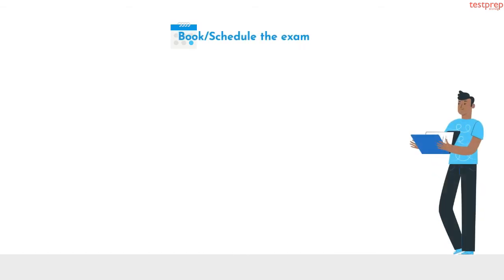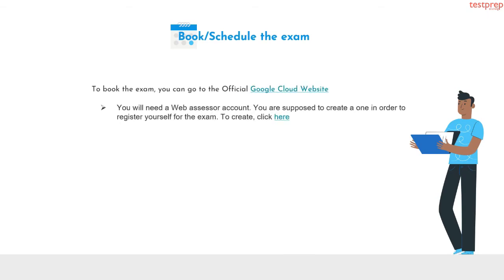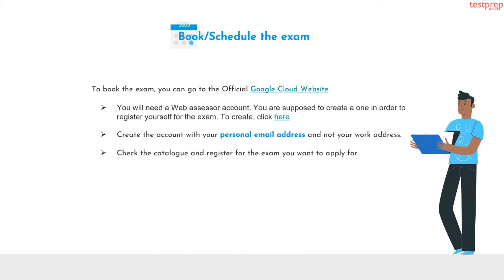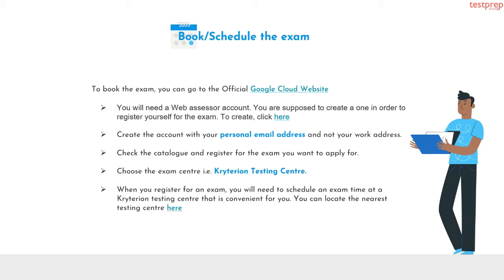Schedule the exam. If you are determined enough to go for this exam and become a certified Google Cloud Architect, it's time to register. Following are the steps: first, you will need a web assessor account — create one in order to register yourself for the exam; second, create the account with your personal email address and not your work address; third, check the catalog and register for the exam you want to apply for; fourth, choose the exam center, that is, Criterion Testing Center; fifth, when you register, you will need to schedule an exam time at a Criterion Testing Center that is convenient for you.